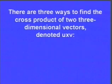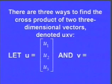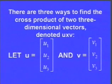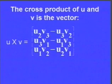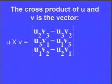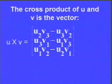There are three ways to find the cross product of two three-dimensional vectors. The cross product is denoted u cross v. One way is to memorize a formula: if u is (u1, u2, u3) and v is (v1, v2, v3), then u cross v is the vector (u2·v3 − u3·v2, u3·v1 − u1·v3, u1·v2 − u2·v1). You can memorize that, but it's tough to remember, so there are other ways.